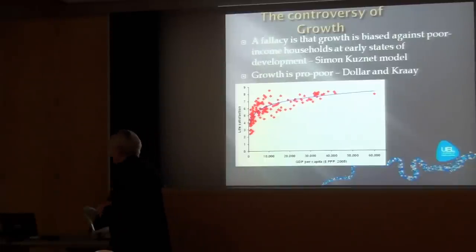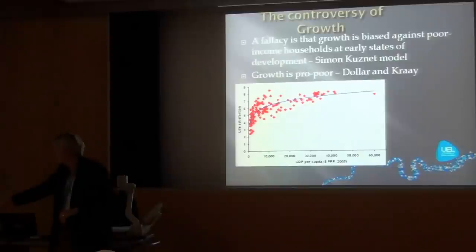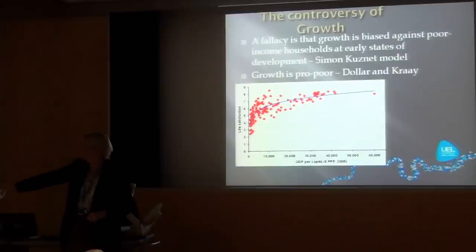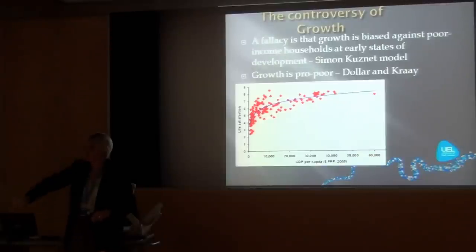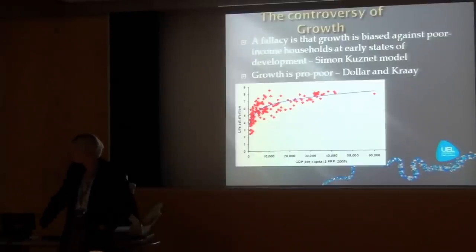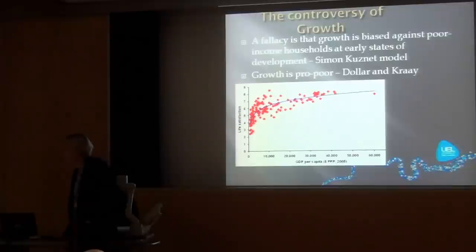Countries that have the highest per capita income also tend to have a higher standard of living and life satisfaction. Countries with lower incomes, with a few exceptions, tend to have lower life satisfaction. So, countries whose incomes are going up consistently — like India, China, Brazil, Malaysia, Singapore, Turkey — see fewer people in poverty and more political stability.